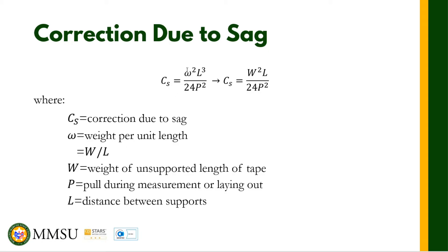In the formula, omega (ω) is the weight per unit length, and W is the total weight of the unsupported length. The relationship is: ω = W / L. So we have two forms of the formula we can use — one using ω (weight per unit length, e.g., kg/m) and one using W (total weight). P is the pull during measurement, which can be in kilograms or pounds. L is the distance between supports.